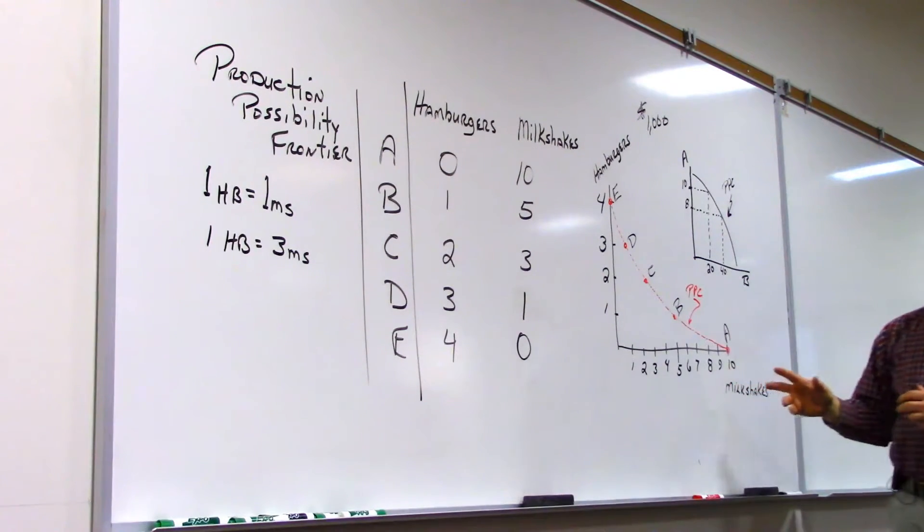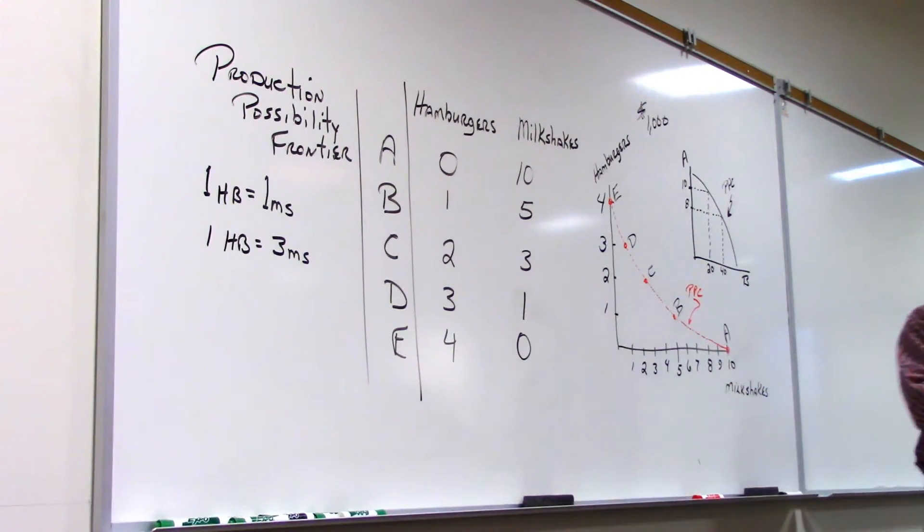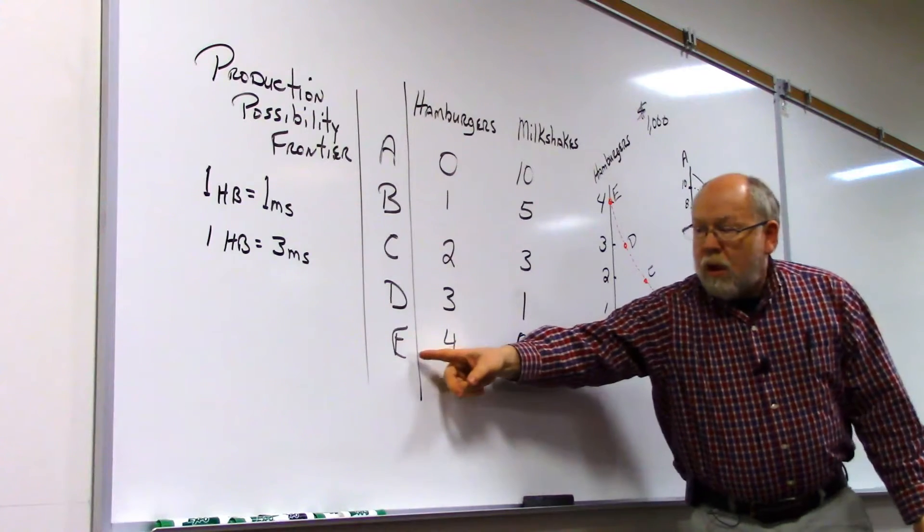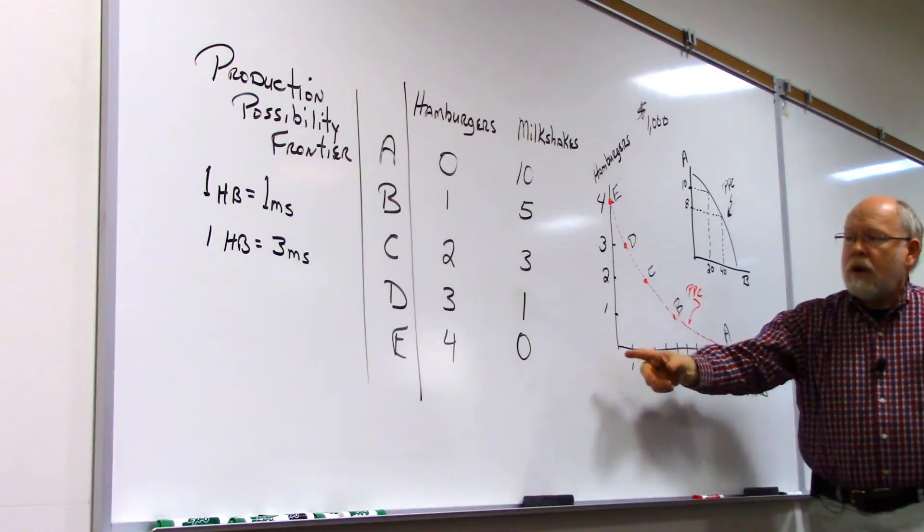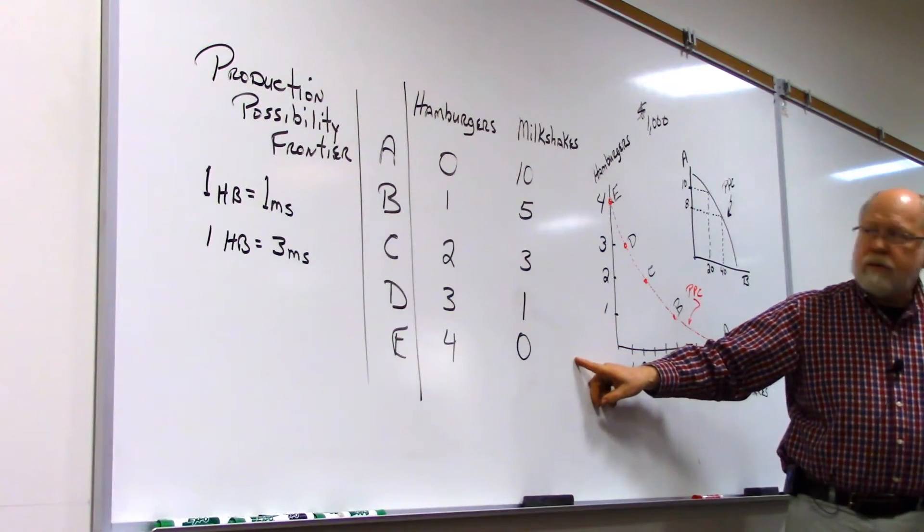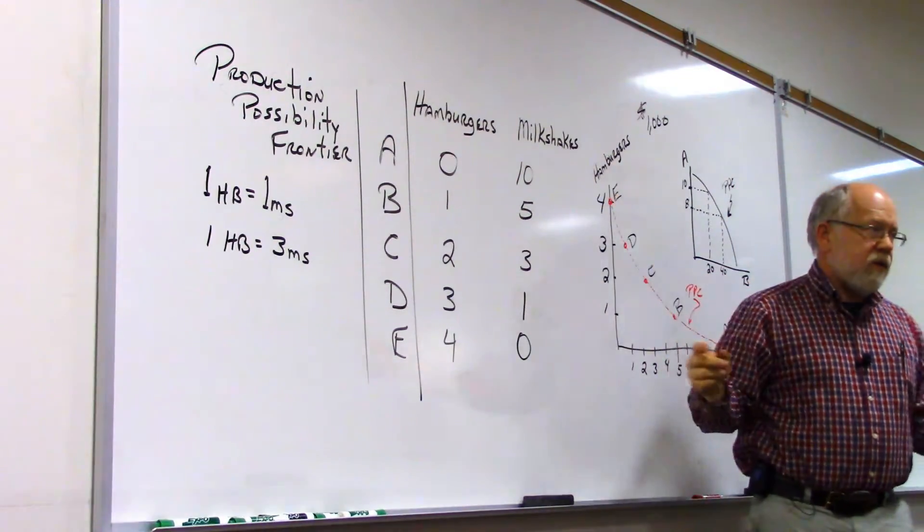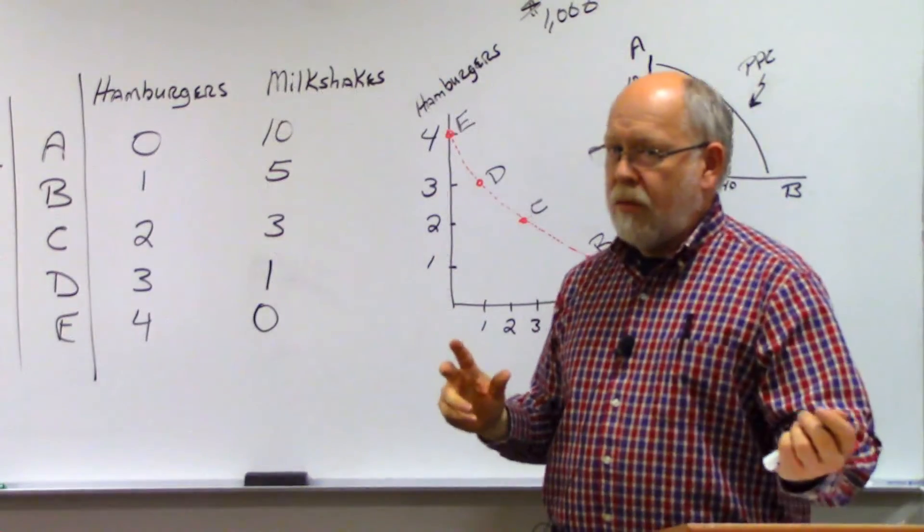Now let's look over here and say, okay, we produce a unit of hamburgers, a unit of milkshakes, and this is kind of obvious here. If we produce all hamburgers, we're going to make $4,000. If we produce all milkshakes, we're going to make $10,000. This is a no-brainer.